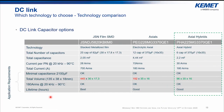Going back to the same application example and using the actual hybrid 370 microfarad, 63 volt, 16×35 case size — in this case we need only half the number of components to reach the requirement. We still fulfill the capacitance requirement, fulfill the current requirement, and fit within the required volume.